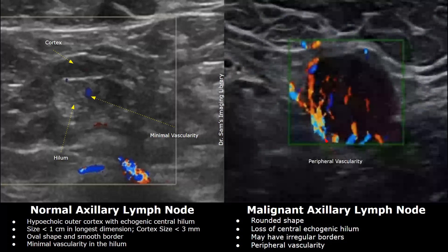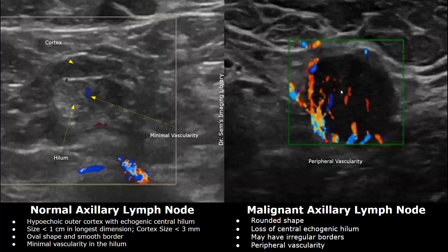This is another image of a malignant axillary lymph node showing peripheral vascularity on color Doppler. The lymph node has a rounded shape and there is loss of the central echogenic fatty hilum. Thank you so much for watching — please subscribe and stay tuned for more imaging videos.